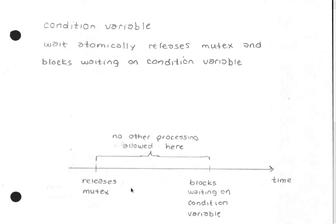The reason atomicity is required: if releasing the mutex and blocking were not atomic, another thread could come in, change the state requiring the condition variable to be signaled, signal it, and because the original thread wasn't yet blocking, it would never see that signal. When you block waiting on a condition variable signal, you only see things that happen after you block — anything that happened before is missed. That's why the wait operation atomically releases the mutex and blocks.